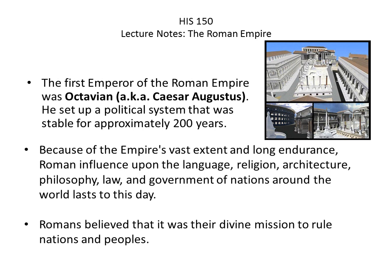Octavian set up a political system that was stable for approximately 200 years. Despite the inauspicious beginnings, he set up a pretty stable environment, and the fact that he was able to maintain the Empire through some of his successors' inadequacies and downright illegal behavior is pretty amazing.